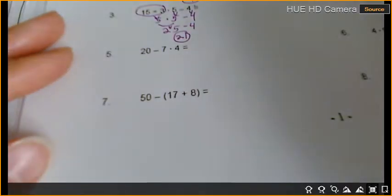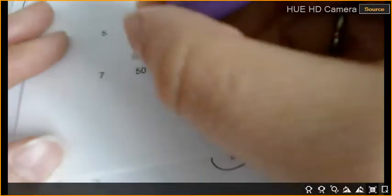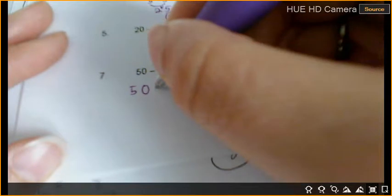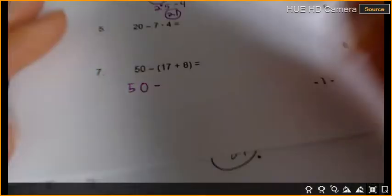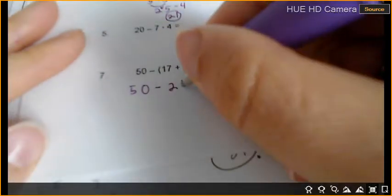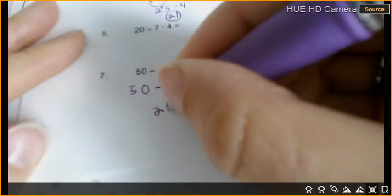Number 7. Is there any parentheses? Number 7. 17 plus 8. Which is 25. So, minus 25. What's 50 minus 25? 25. So far so good?